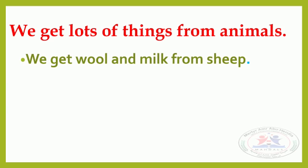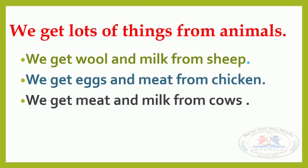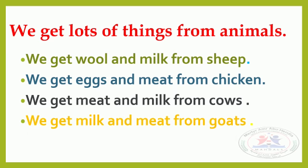We get wool and milk from sheep. We get eggs and meat from a chicken — يعني نحصل على البيض واللحمة from a chicken. We get meat and milk from cows. We get milk and meat from goats — وبنحصل على اللبن واللحمة from goats.